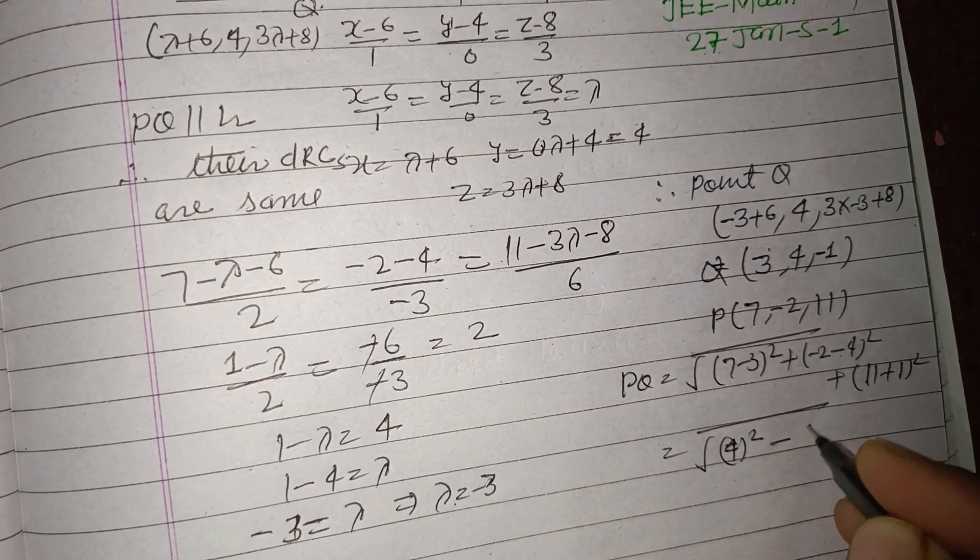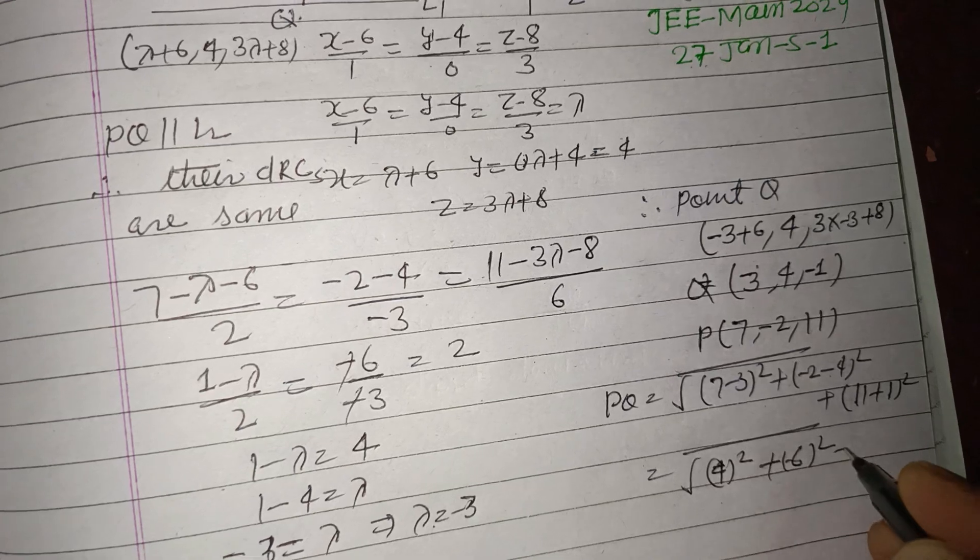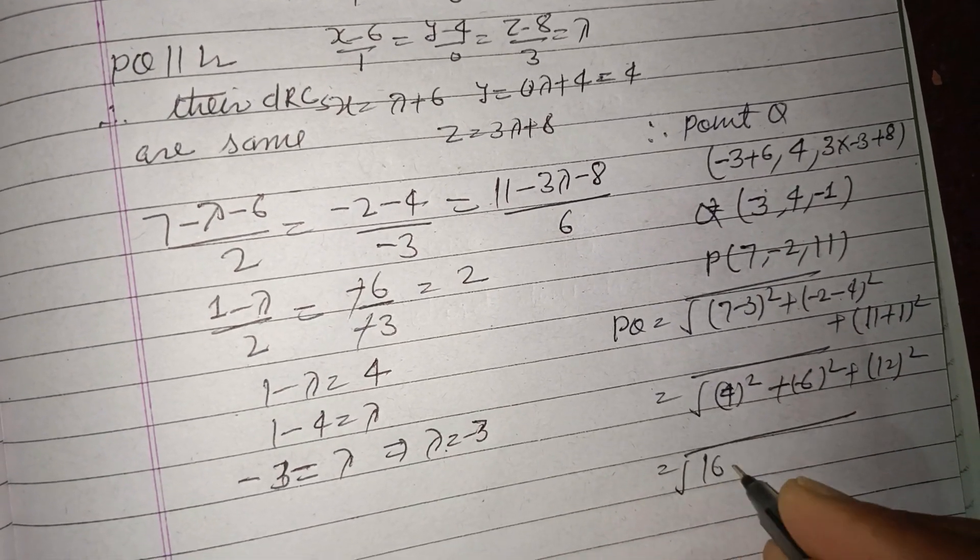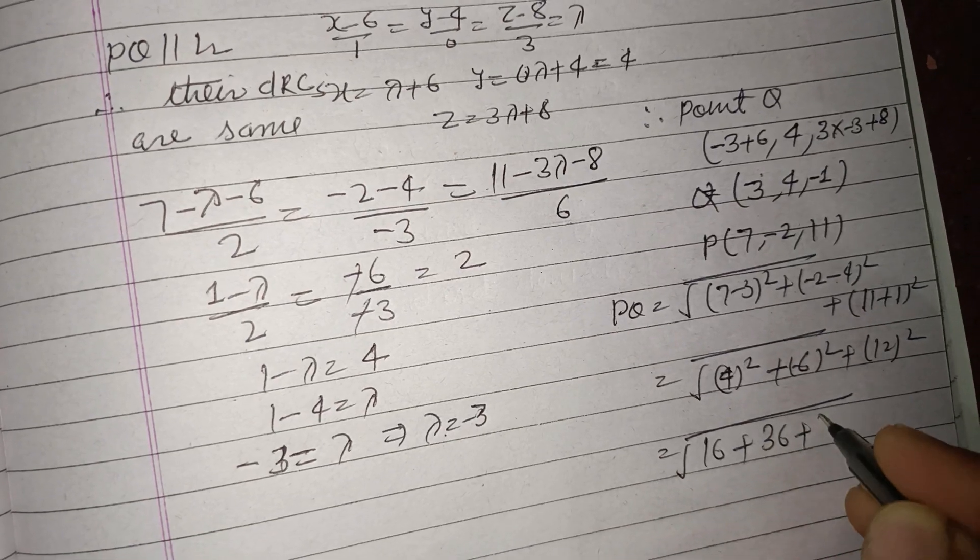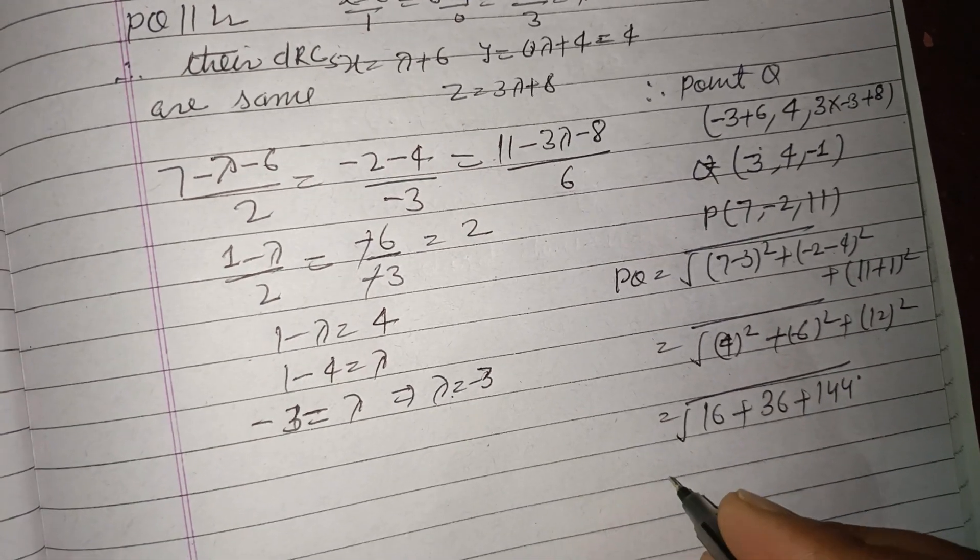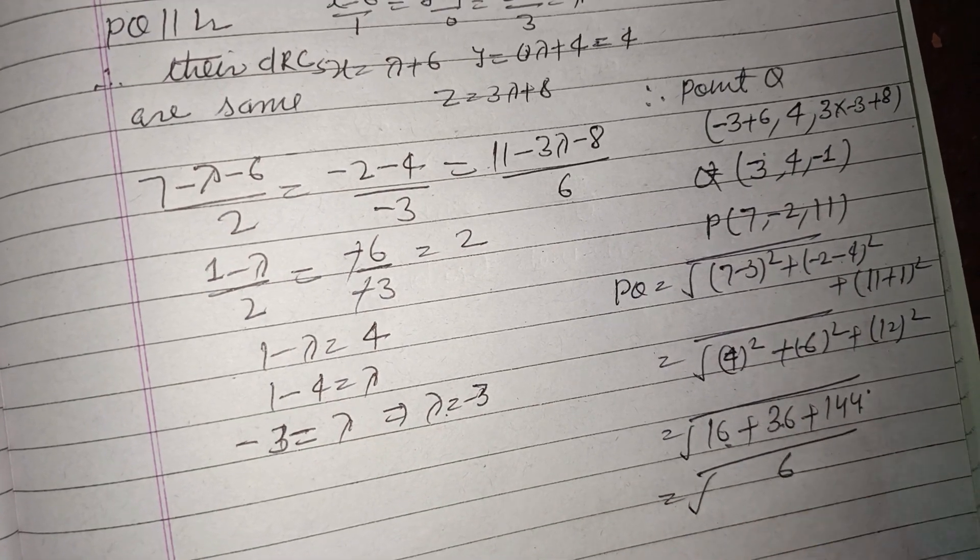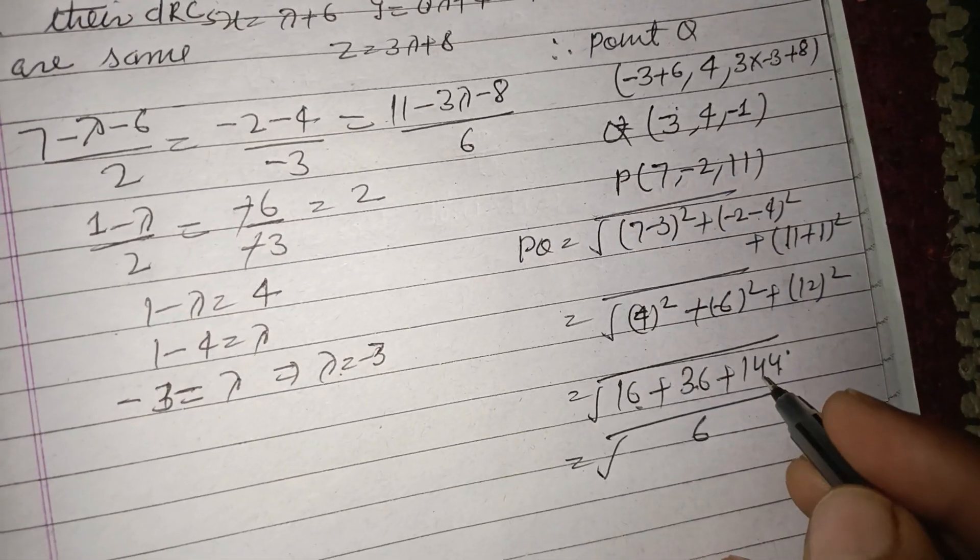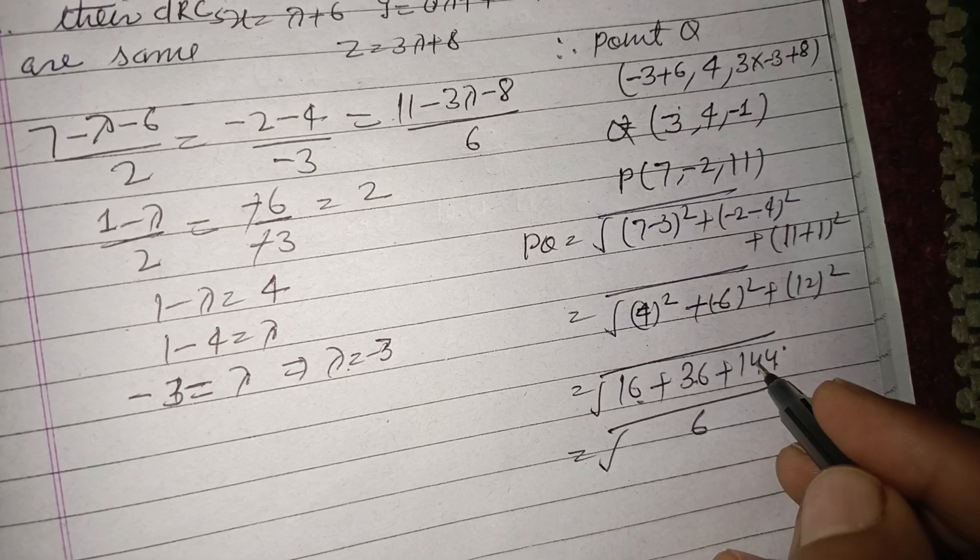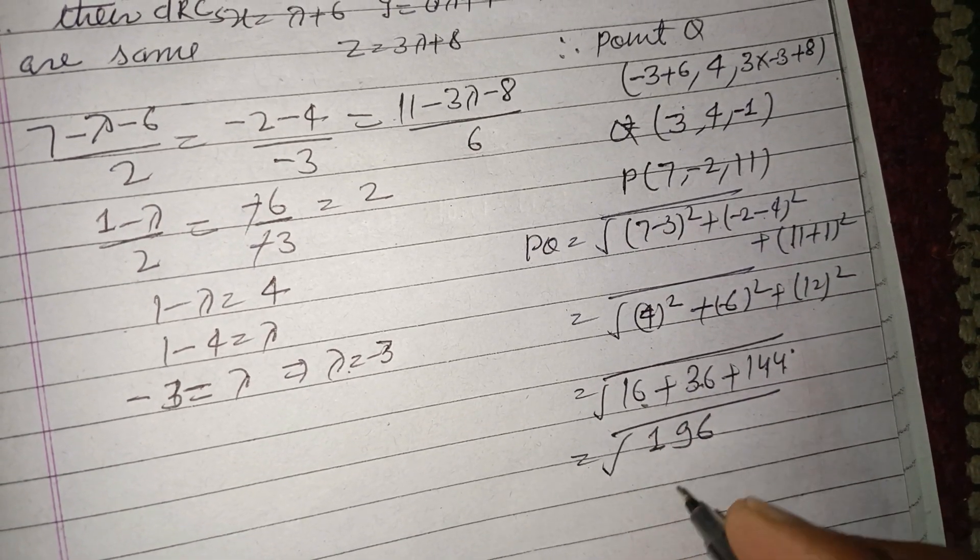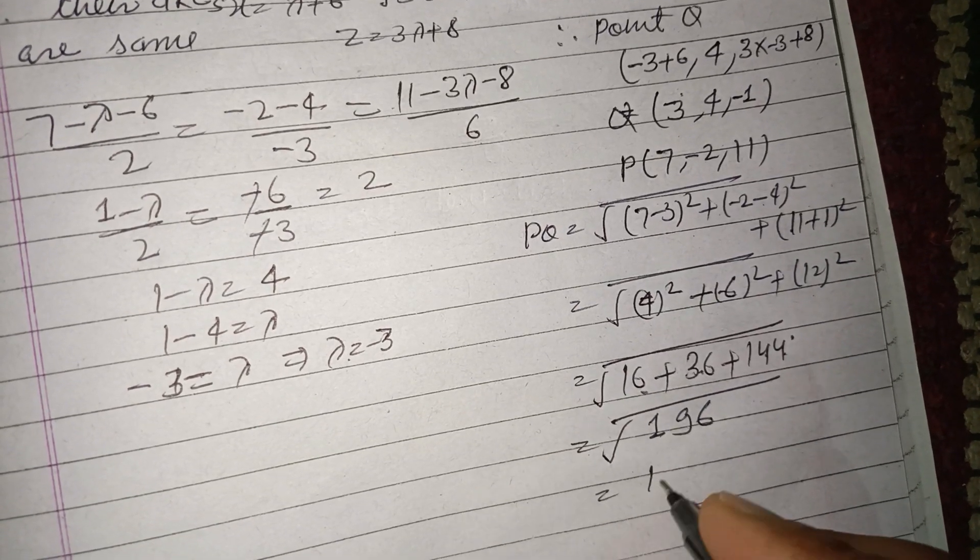4 squared is 16, this is 36, and this is 144. So 16 + 36 + 144 = 196, and 196 is the square of 14. So this is 14. Therefore, the distance is